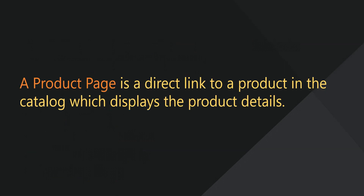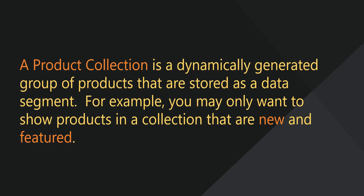A product page is a direct link to a product in the category displaying the product details. A product collection is a dynamically generated group of products that are stored as a data segment. For example, you may only want to show products in the collection that are new or listed as a featured product.